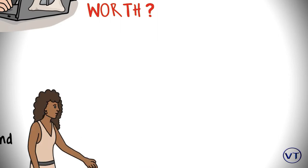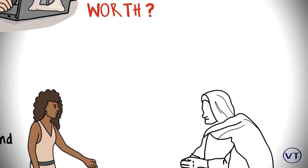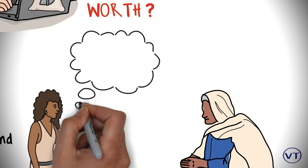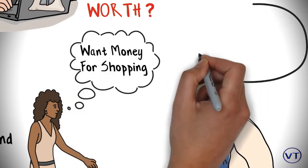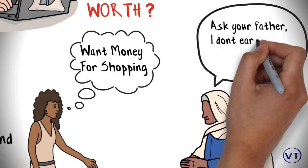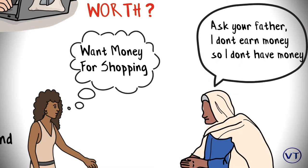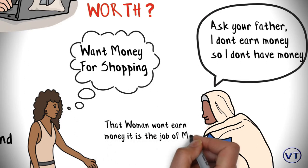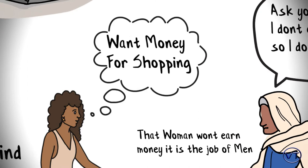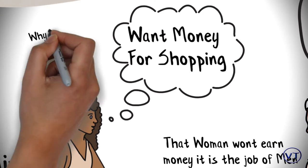Author quotes one example of how mind programming forms. Imagine there is a daughter who wants some money and she went to her mother and asked for money. Mother said to her, ask your father, I don't earn money, so I don't have money. What message is this mother indirectly giving to her daughter? That women won't earn money, it is the job of men. And this message will definitely have some impact on daughter.